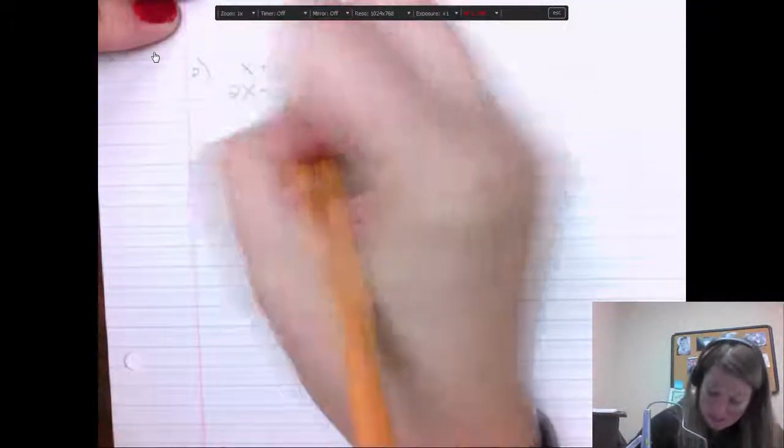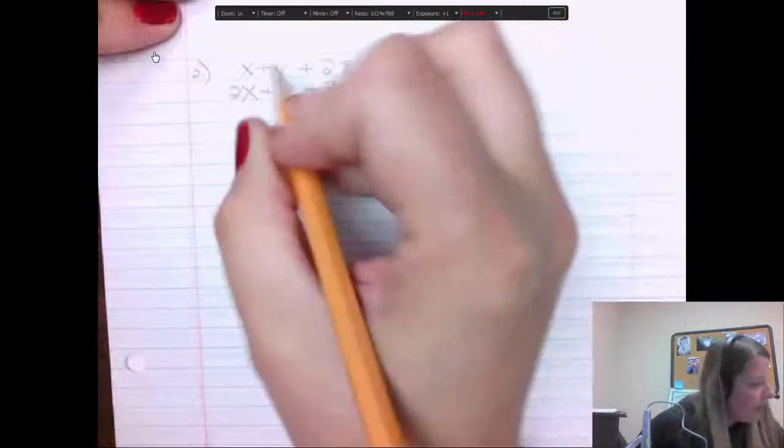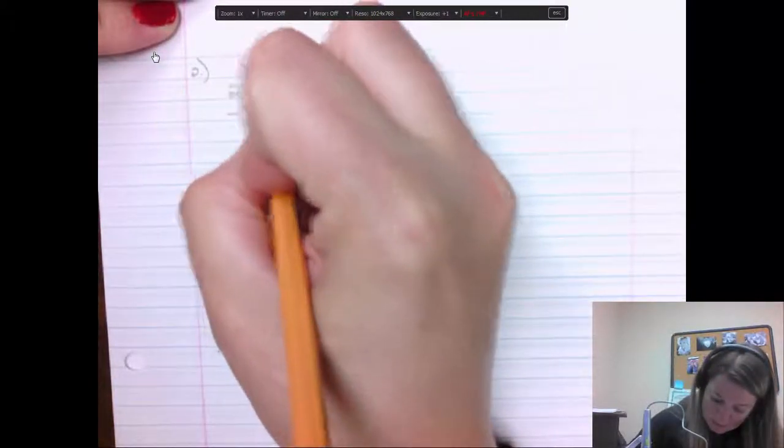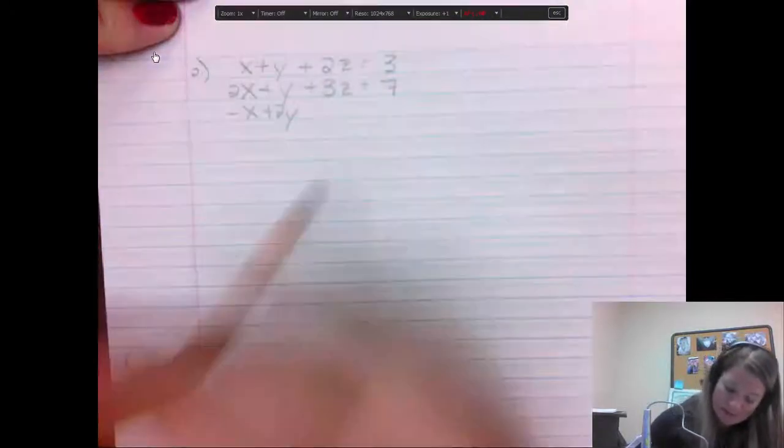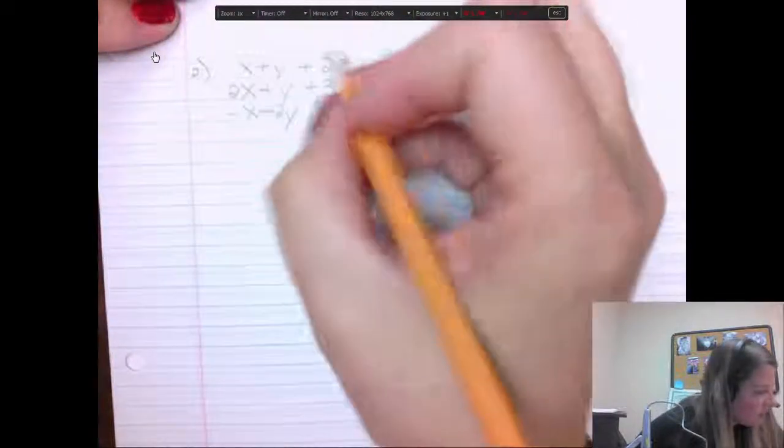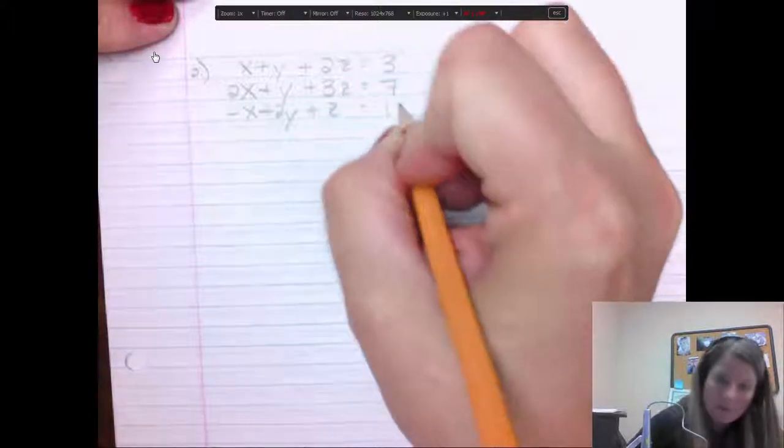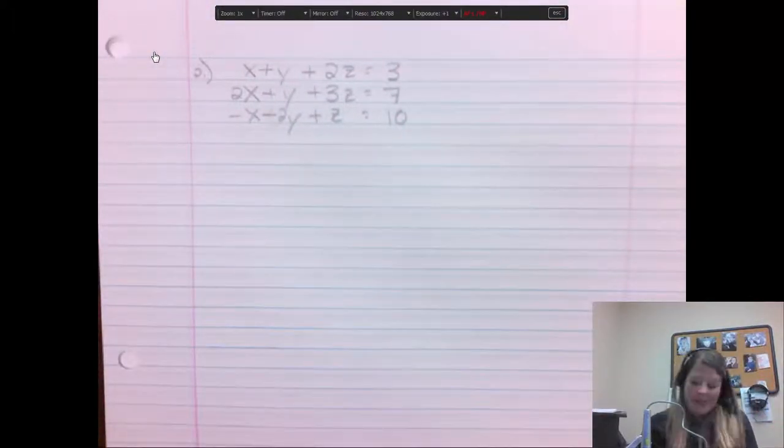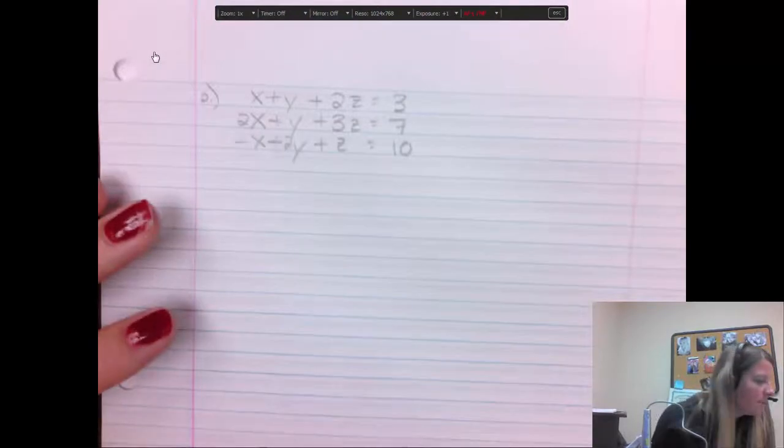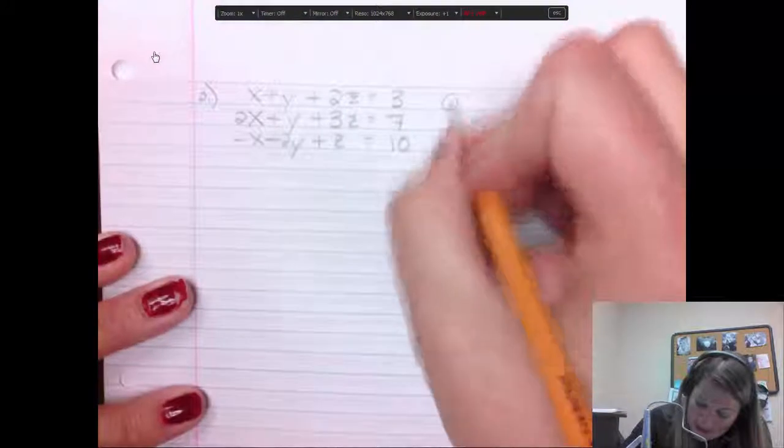You have a little bit prettier equations. Okay, so let's do this one. So this one will make us do this extra step in it. x plus y plus 2z equals 3. 2x plus y plus 3z equals 7. And negative x minus 2y plus z equals 10. Okay. So this is straight out of the actual textbook part. This is example two.